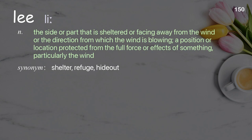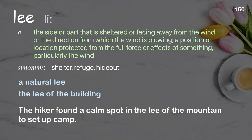Lee: the side or part that is sheltered or facing away from the wind; a position or location protected from the full force or effects of something, particularly the wind. Examples: a natural lee; the lee of the building. The hiker found a calm spot in the lee of the mountain to set up camp.